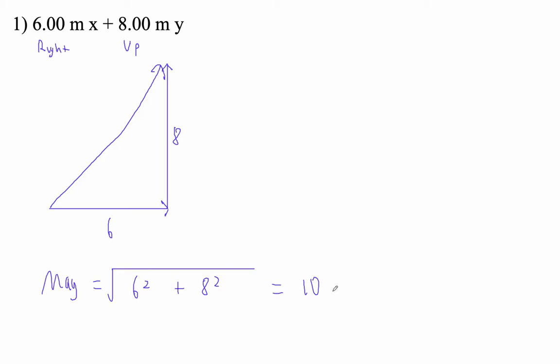Okay, and that's meters, so we label our magnitude 10 meters. And then we got to find that angle. This is the opposite side, that's the adjacent side. So that angle is inverse tangent of opposite over adjacent. That angle is inverse tan of 8 over 6.